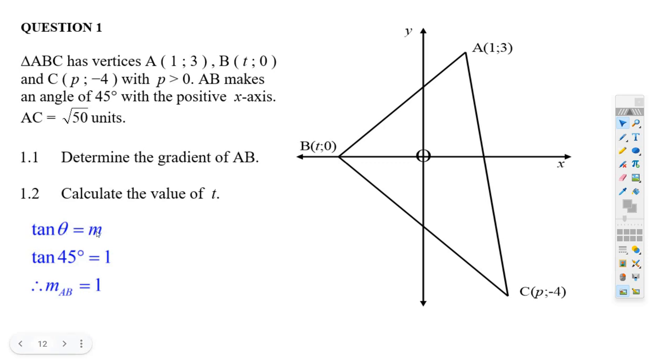You know that the tangent of an angle is equal to the gradient. So tan 45° equals 1. So that gradient must just be 1. That's it. That's all there is to it.